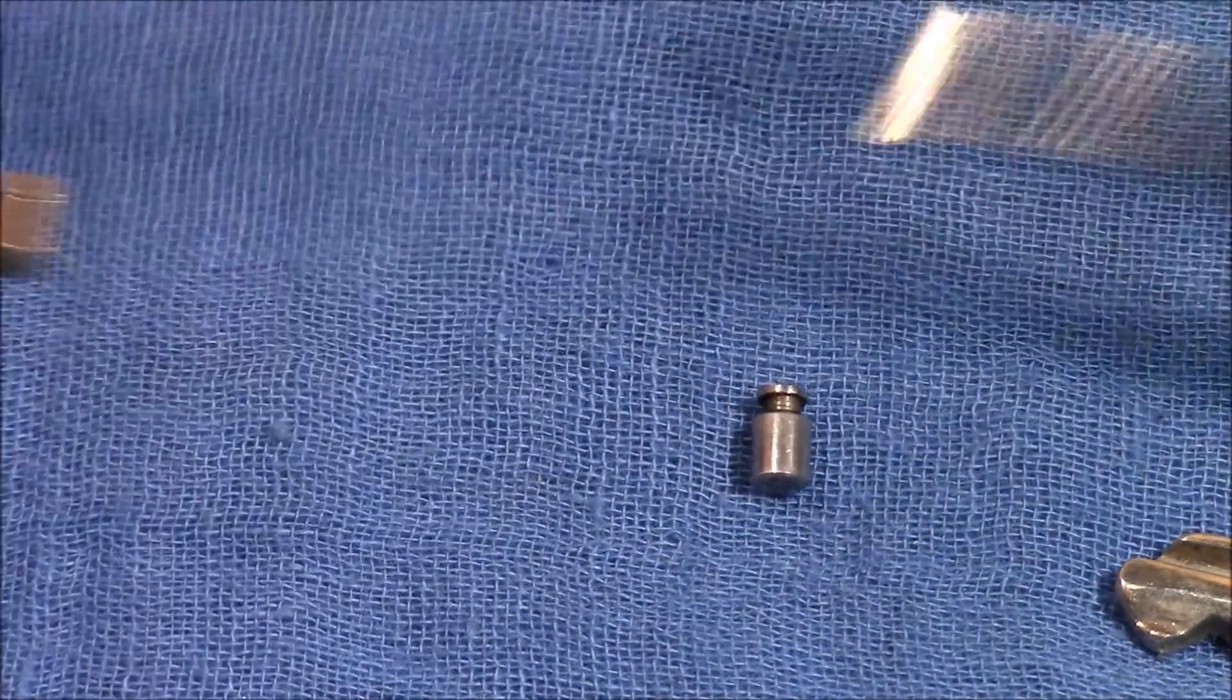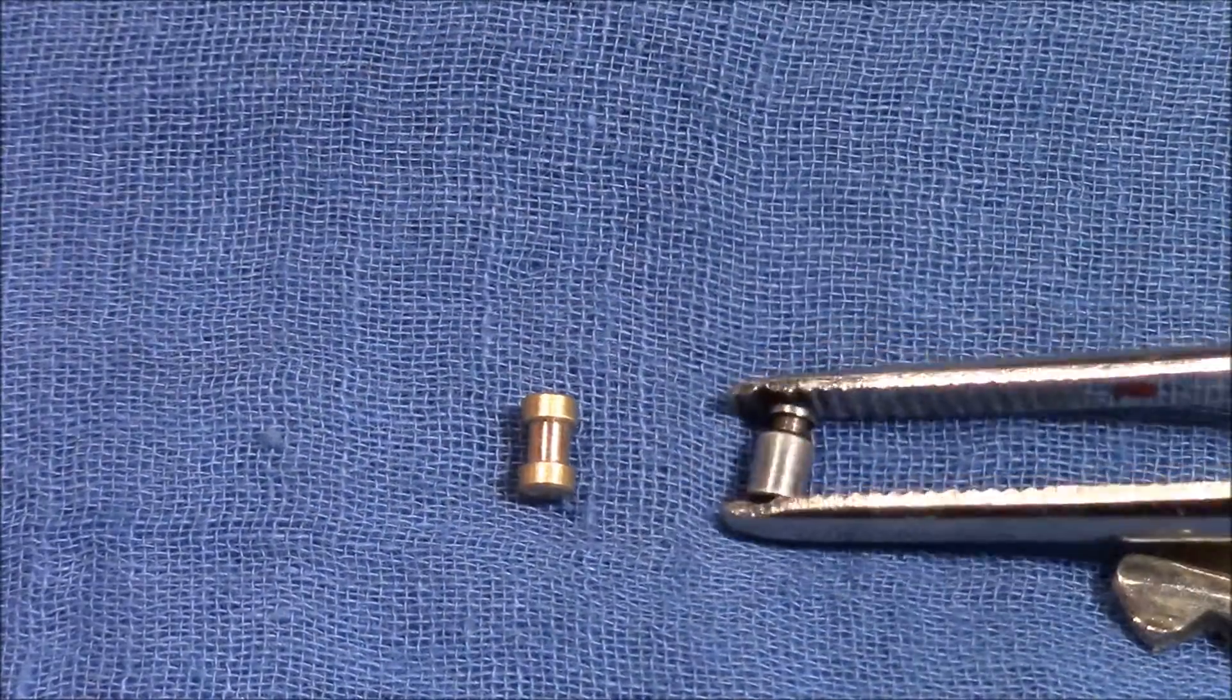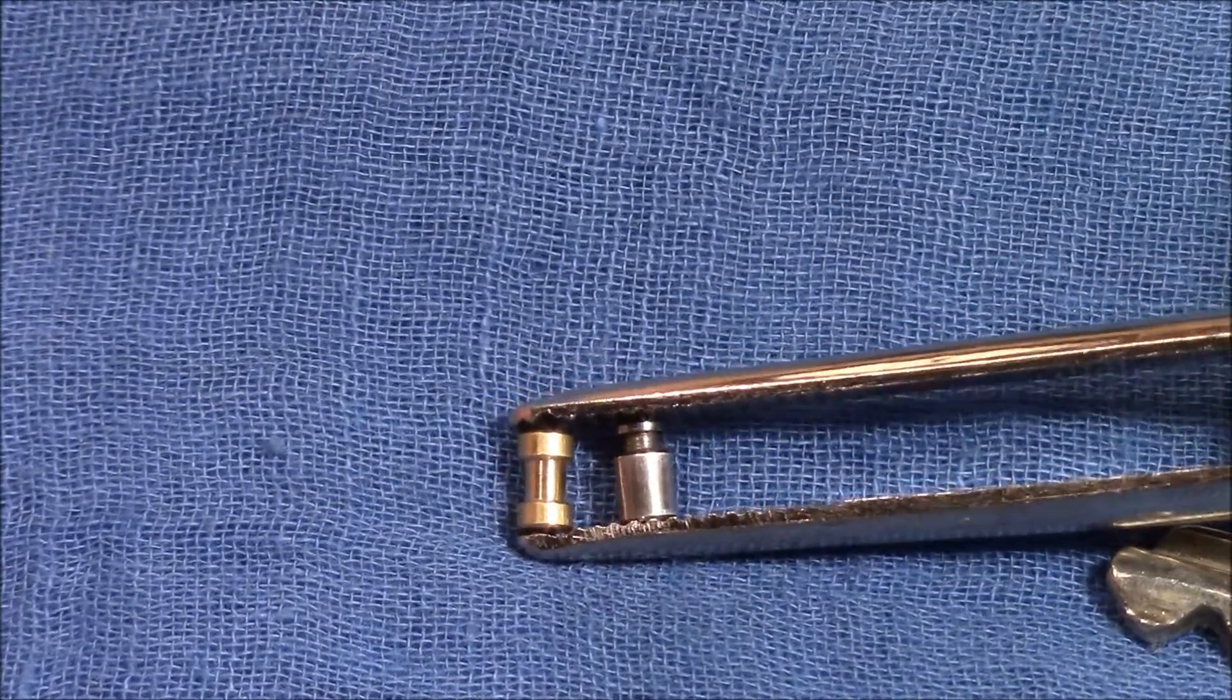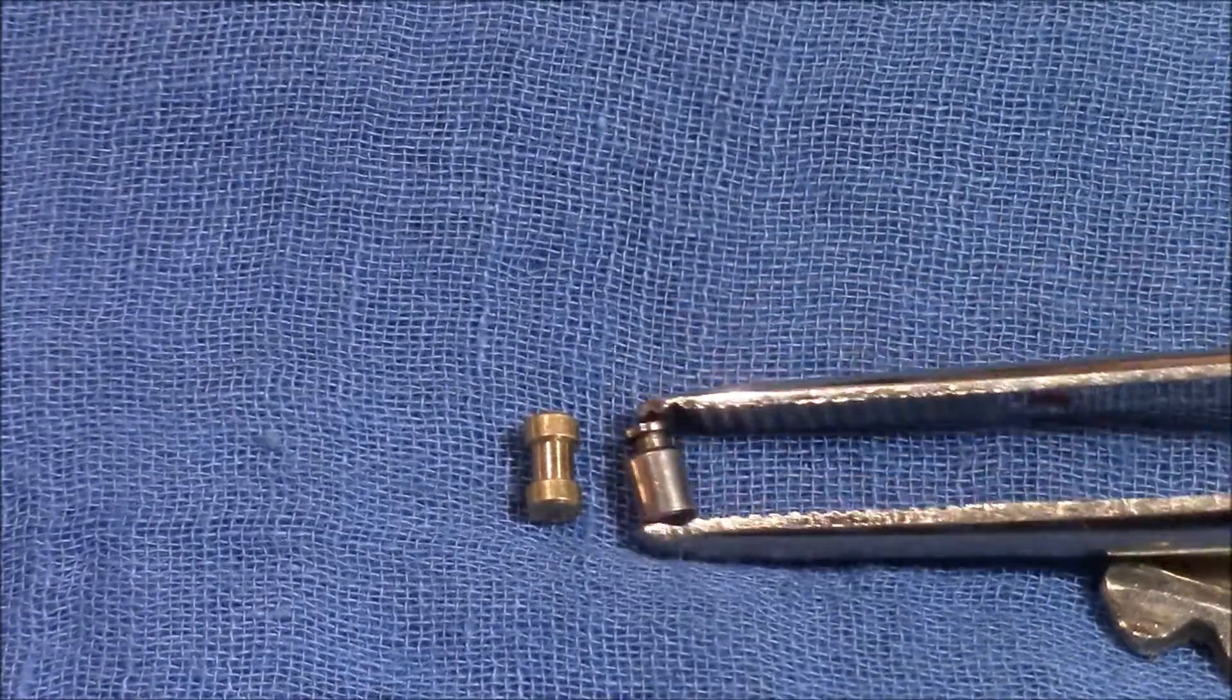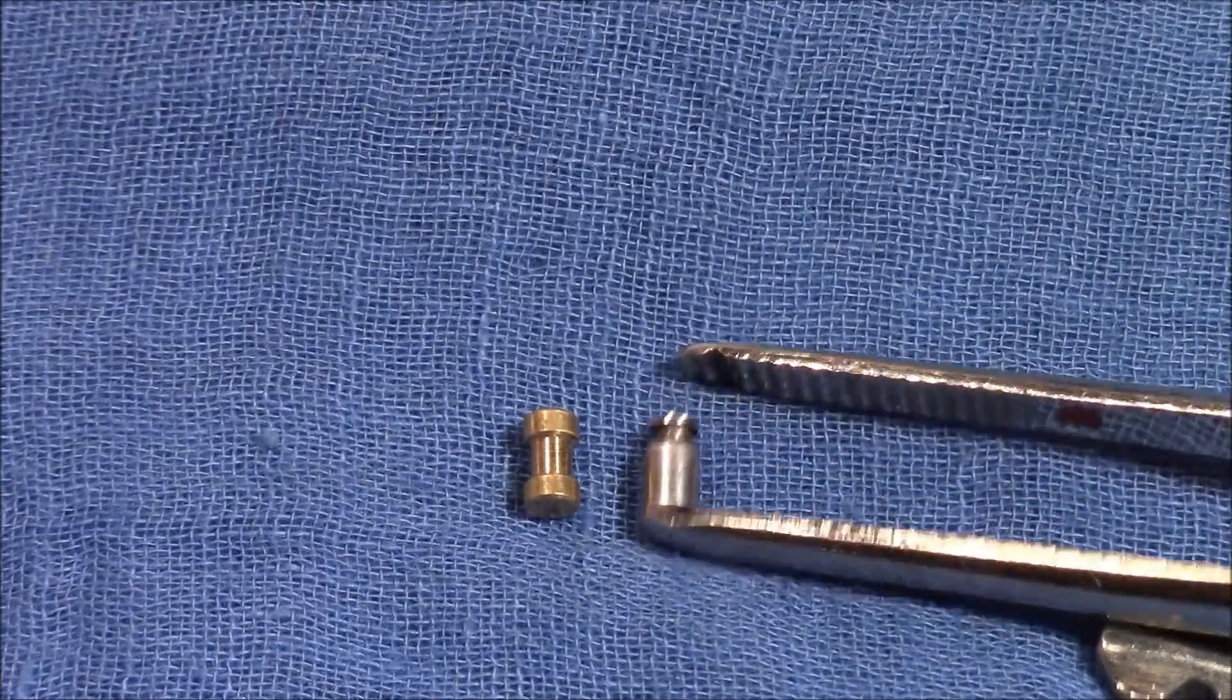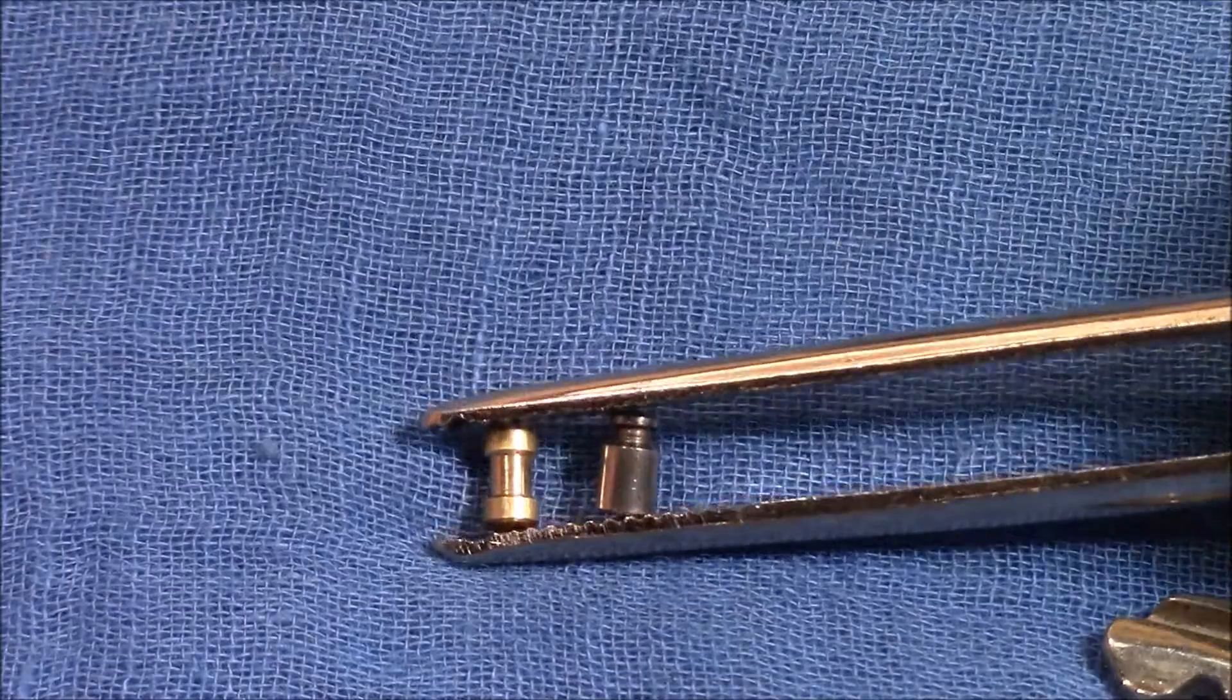And if you compare it to a normal spool, which I have here, you can see the difference. The spool has thick ends and this Ruku pin has a very sharp end and the diameter is also a little bit smaller. So this explains the different picking experience.